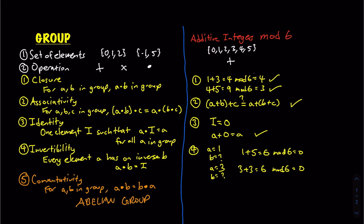We've now shown that the additive group of integers mod 6 is a group. Let's also check commutativity: does a plus b equal b plus a for any two elements? It does — so the additive group of integers mod 6 is not just a group, but an abelian group.